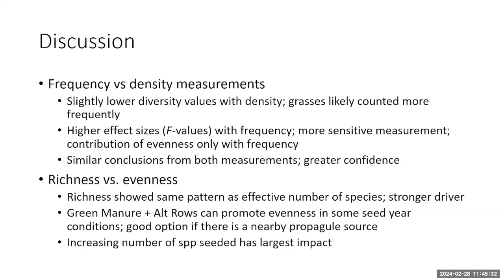We had similar conclusions regardless of which method was used, giving us greater confidence that the diversity effects observed are real. Richness showed the same pattern as diversity, suggesting richness is the stronger driver of diversity rather than evenness. Treatment three — the green manure and alternating grass-forb rows — can promote evenness under some seeding year conditions, which may be a viable option for restorations in areas surrounded by other grassland. However, the best way to increase diversity of CRP restorations appears to be simply to seed more species.